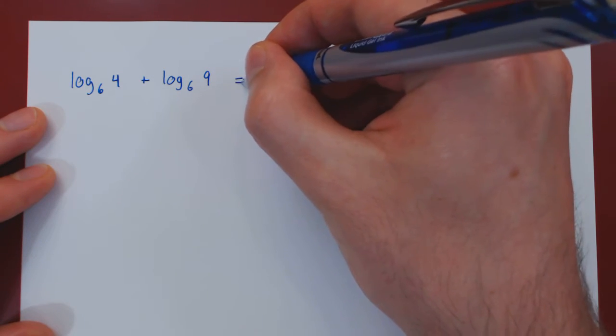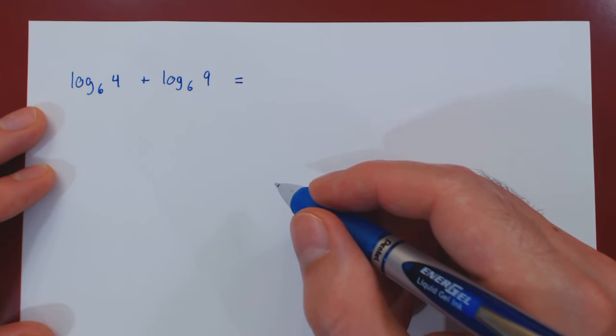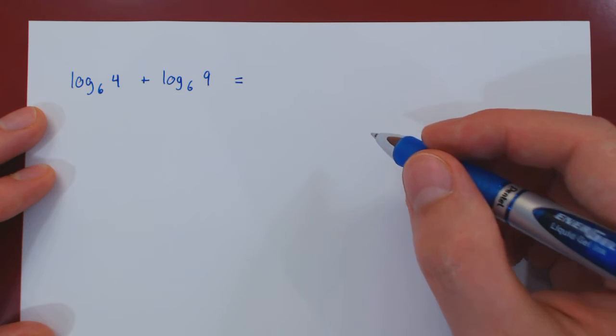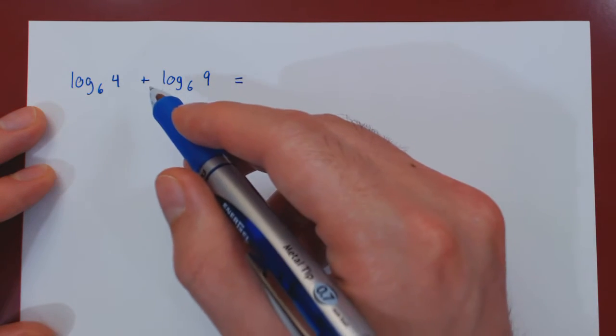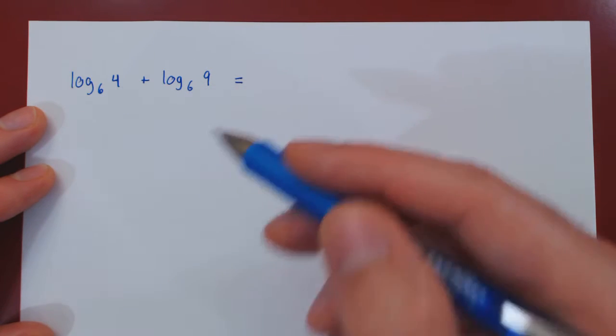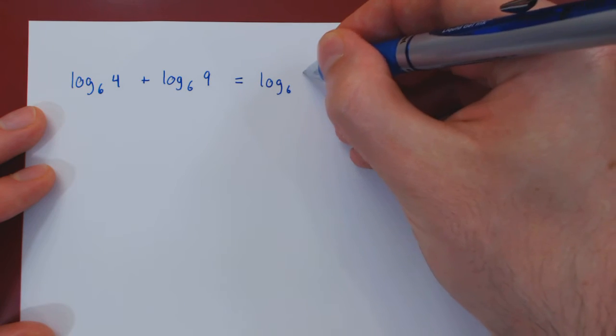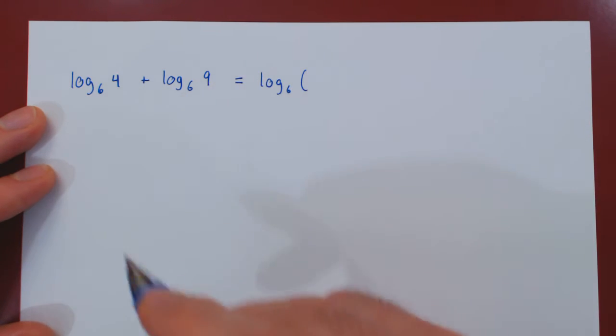Well, if you recall, a fundamental property of logarithms is that the logarithm of a product is the sum of the individual logarithms. So we can go backwards. If we have a sum of logarithms that have the same base, we can combine as a single logarithm by multiplying the two arguments together.